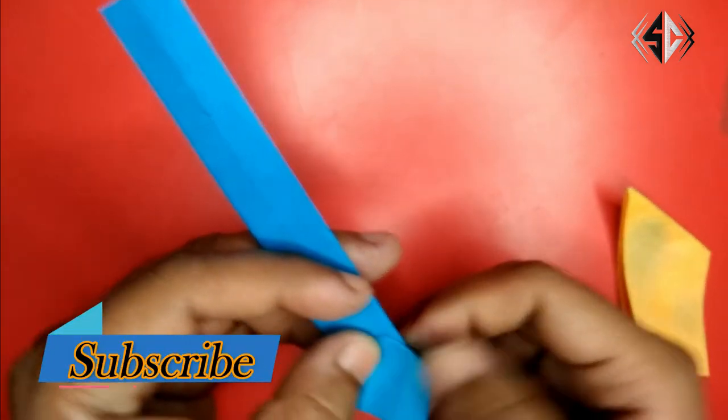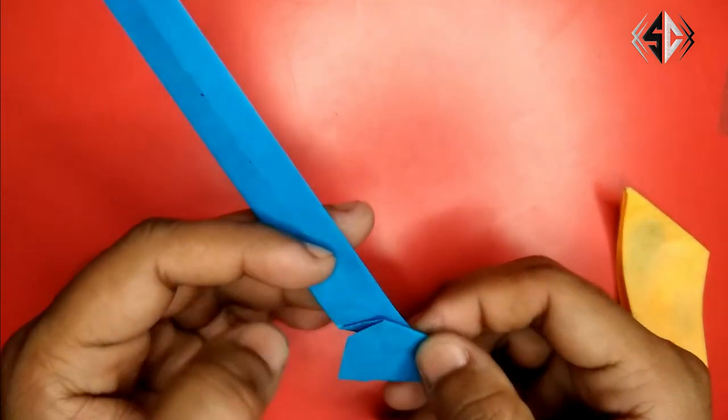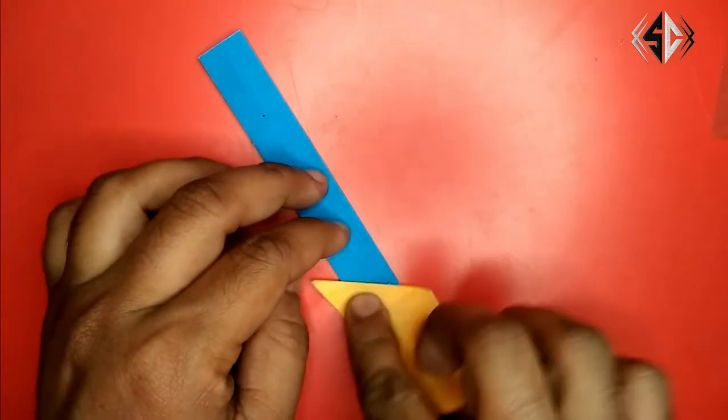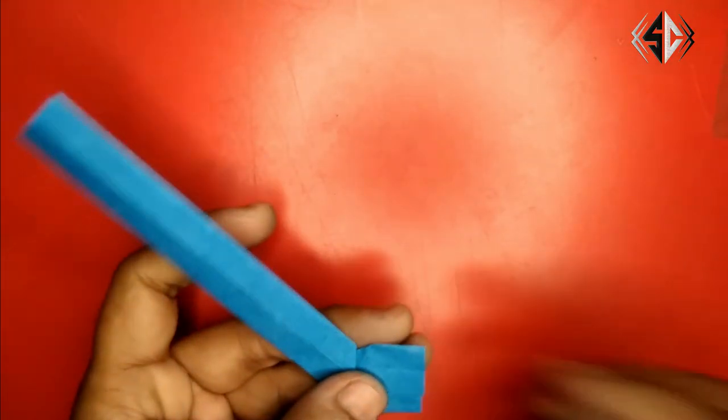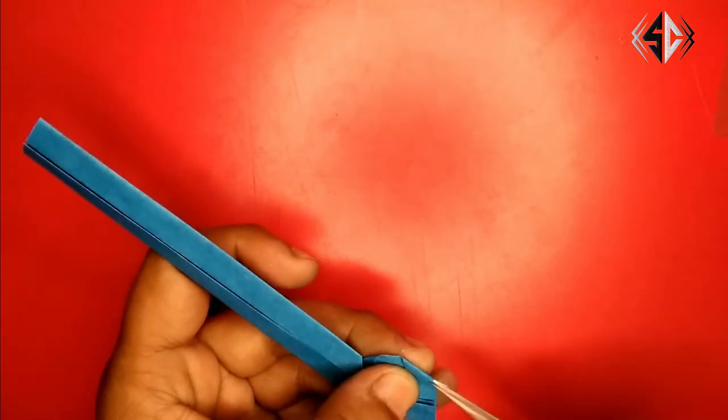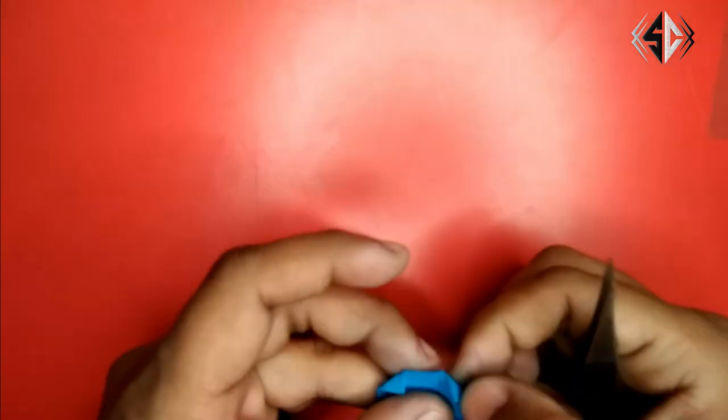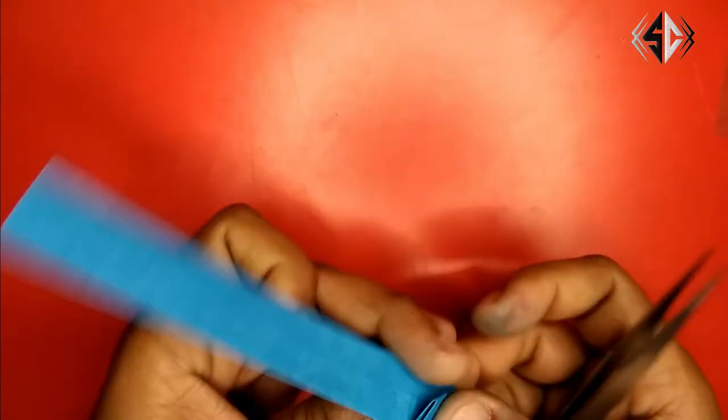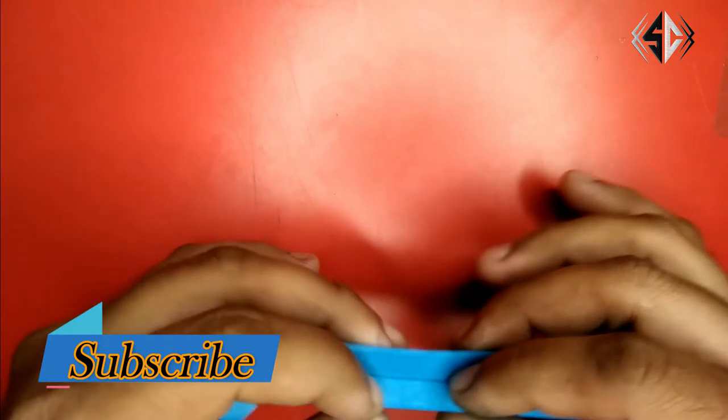Then we will fold the sides from the corner. We will fold the middle center. We will turn around the left part. Then we will completely fold it.